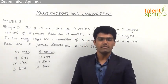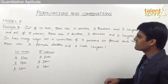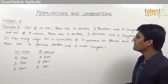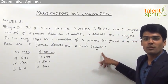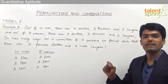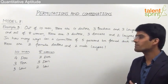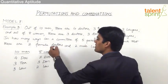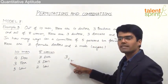Let us now take the third example from model 8 with a new condition. Again the same data: out of 10 men there are 4 doctors, 3 teachers, 3 lawyers, and out of 8 women there are 3 doctors, 3 dancers and 2 lawyers. In how many ways can a committee of 5 persons be formed such that there are 2 female doctors and 2 male lawyers? This is a profession and gender based condition. We need 2 female doctors out of 3, which can be done in 3C2 ways.